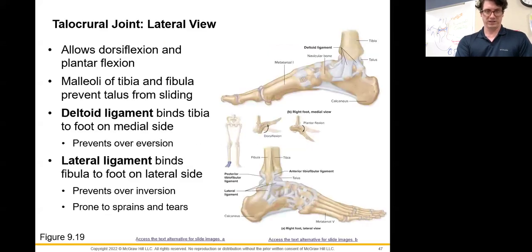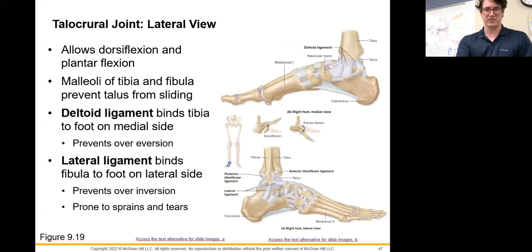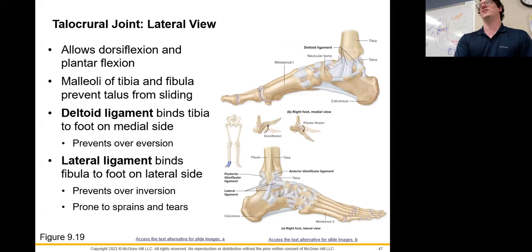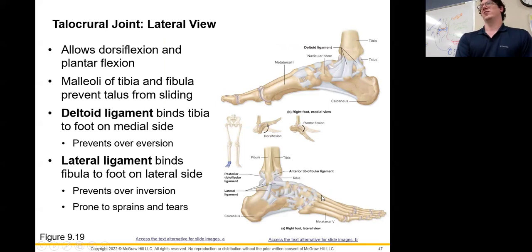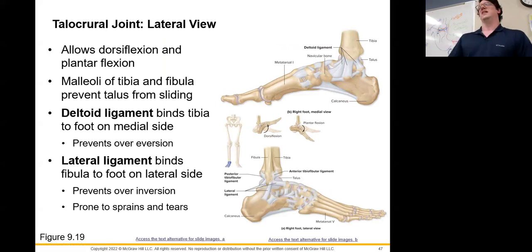The ankle and foot — like the wrist — are extremely complex joints with numerous ligaments connecting all the tarsals. There is simply a lot going on in these distal structures.